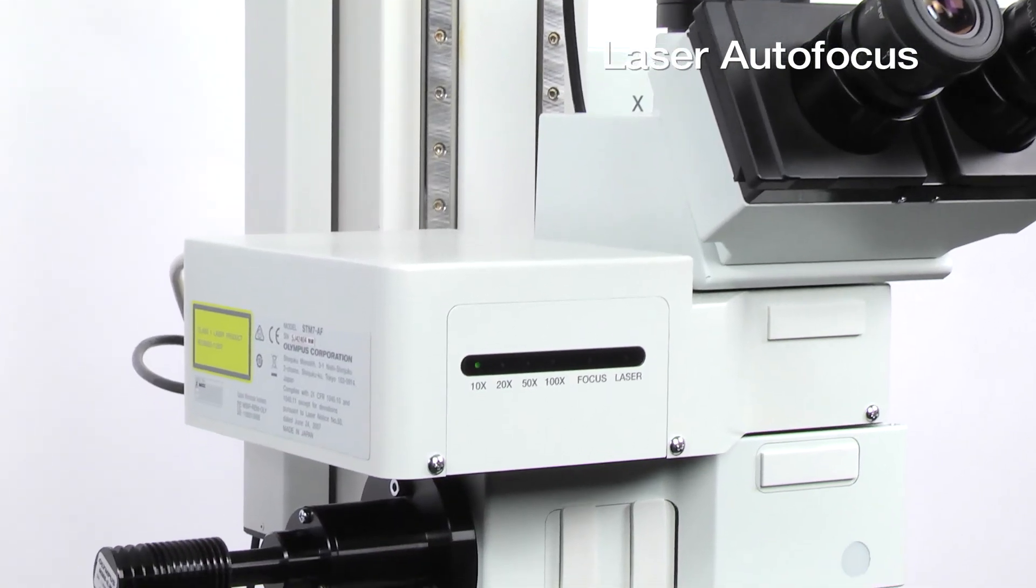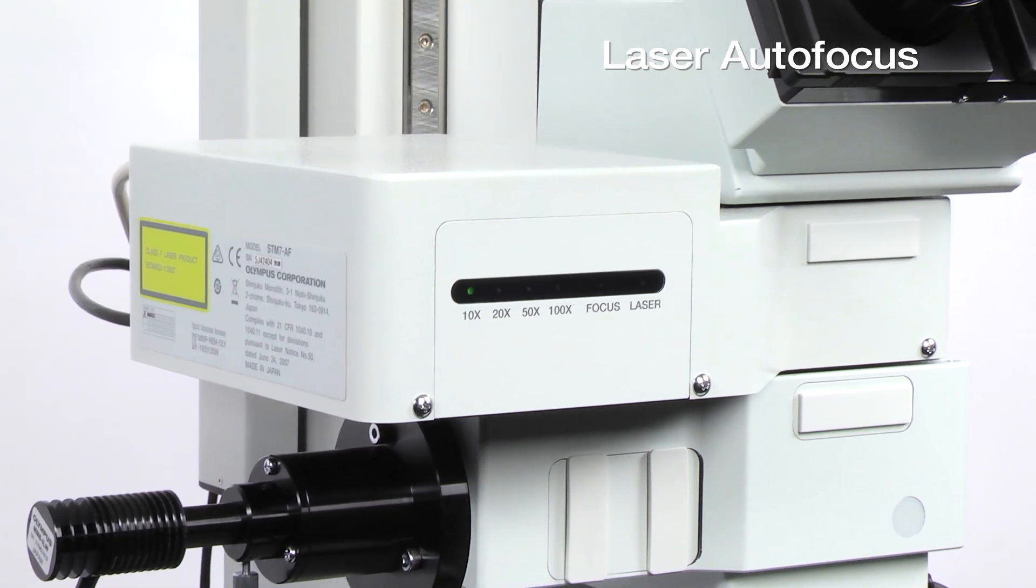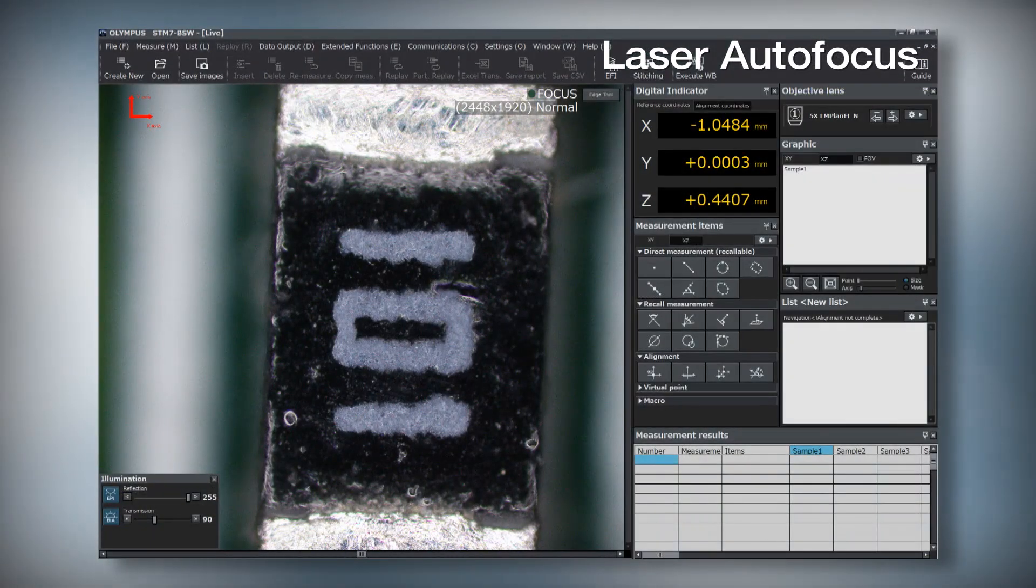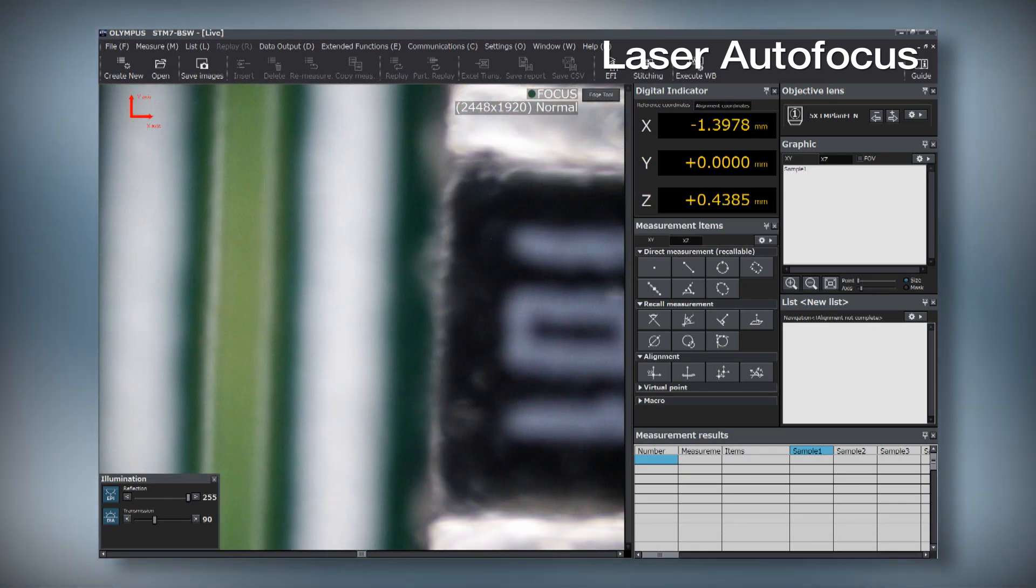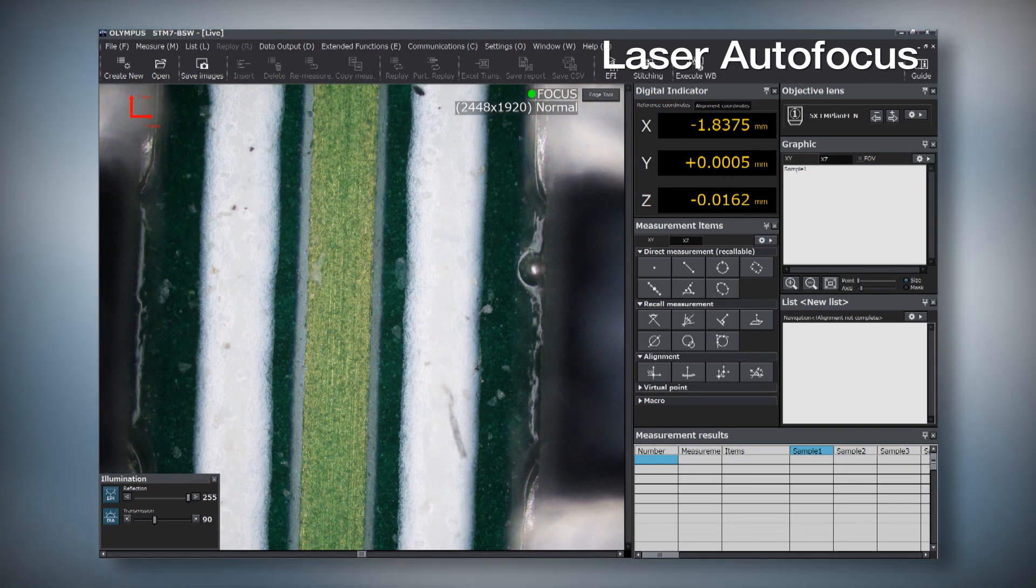A laser autofocus can be paired with the motorized frame. While moving across the sample in the X or Y axis, the laser autofocus controls the motorized height to keep the sample in focus.